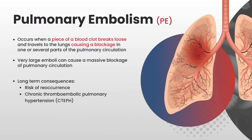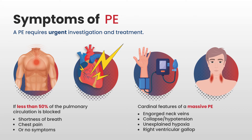Pulmonary embolisms occur when a piece of a blood clot breaks loose and travels to the lungs, causing a blockage in one or several parts of the pulmonary circulation. Very large emboli can cause a massive blockage of the pulmonary circulation, leaving the patient extremely unwell — this is a life-threatening condition. If a patient has had a pulmonary embolism, there can be long-term consequences, including the risk of recurrence and developing chronic thromboembolic pulmonary hypertension, or CTEPH, where the pulmonary vessels become scarred and unable to respond appropriately to increases in cardiac output. A pulmonary embolism requires urgent investigation and treatment.